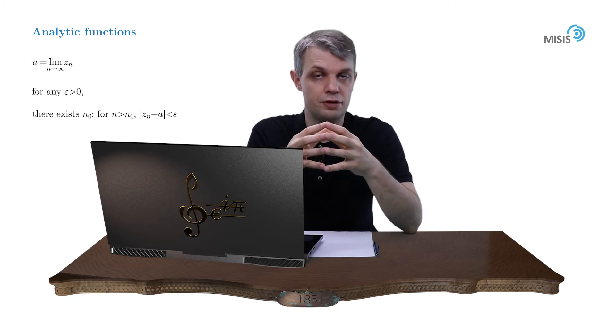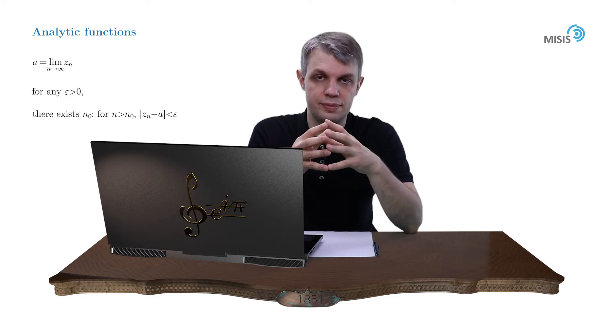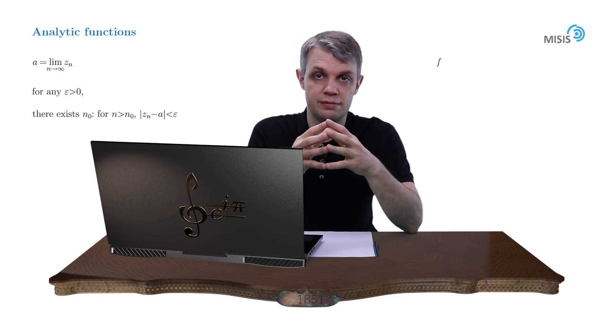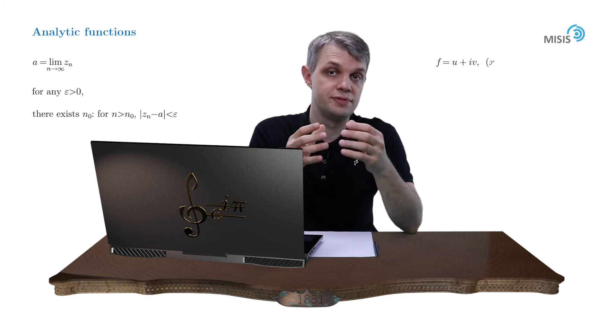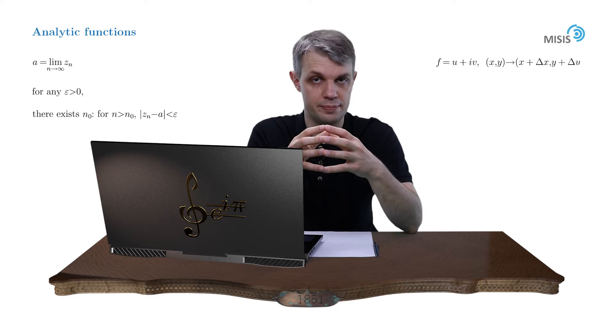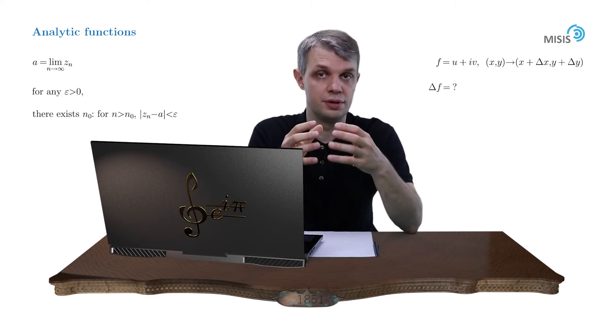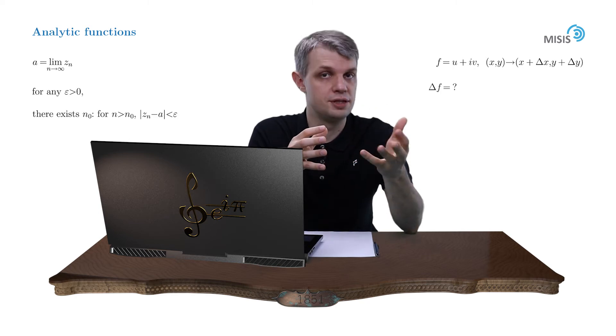However, the definition of the derivative of a complex function does present some problem. Let's imagine a complex function f equals u plus iv and study the change as we move from point x, y to point x plus delta x, y plus delta y. Obviously, this change will depend on the direction along which we move from one point to another. So how would we define the derivative?